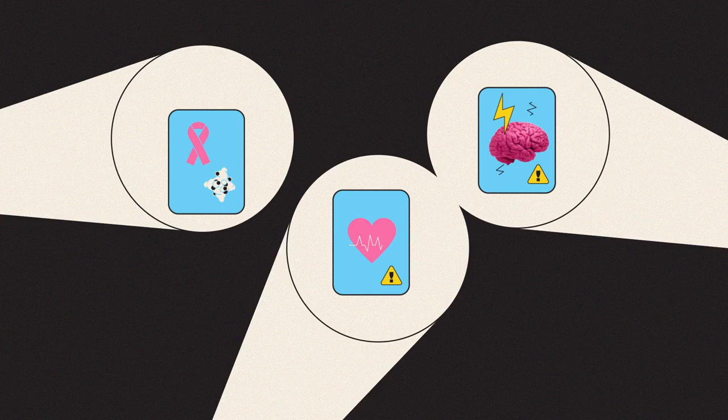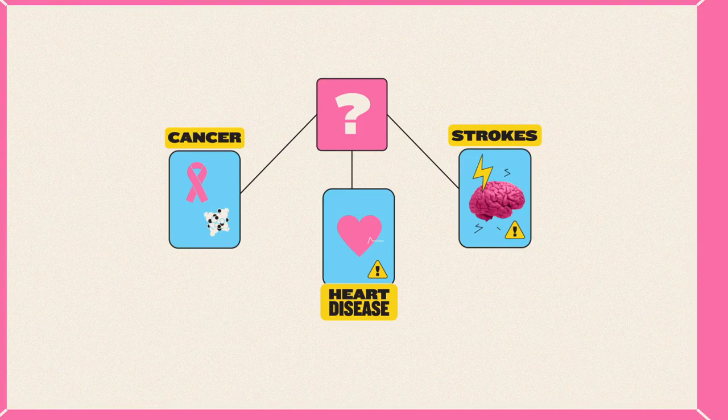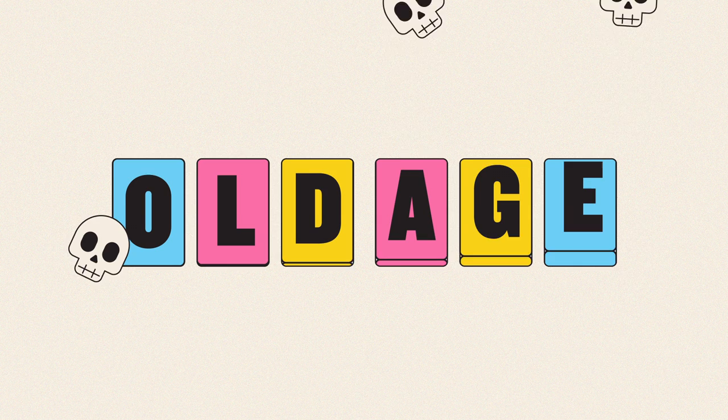Because most of the usual suspects - cancer, heart disease, strokes - have something in common. A single underlying factor that makes each of them much more likely, and is arguably responsible for up to two-thirds of all deaths worldwide. Our biggest killer is old age.